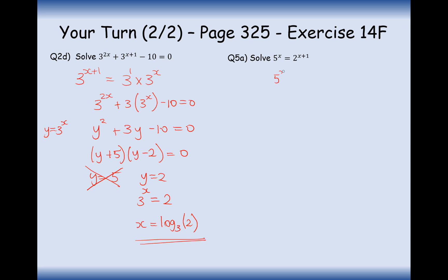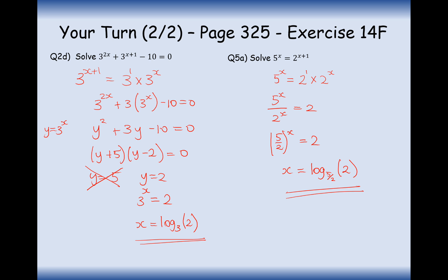For question 5a, we want to create an expression where the power on the number is equal. We split up 2x plus 1 into 2 to the power of 1 times 2 to the power of x, then divide by 2 to the power of x, so we effectively have 5 to the power of x divided by 2 to the power of x, which leaves us with a 2. We factorise out the power on x, and the opposite of 5 over 2 to the power of something is log base 5 over 2. So our final answer is log base 2.5 of 2.